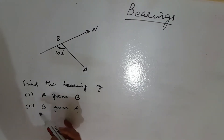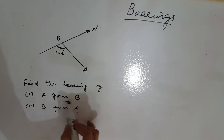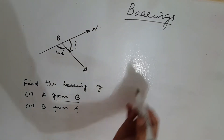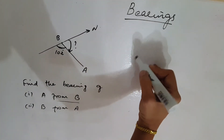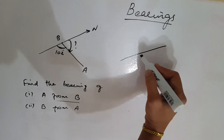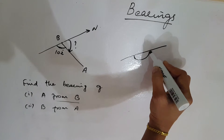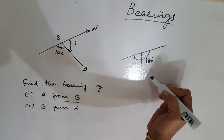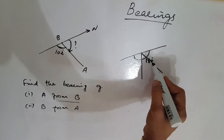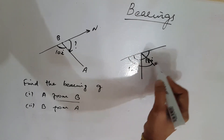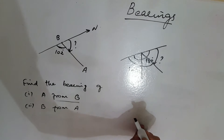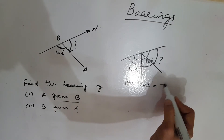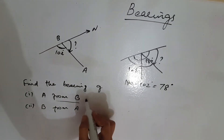In this question, find the bearing of A from B and B from A. From B means from B to A, so you can calculate in this area. This is the north side. This full is 180 degrees. This goes this side, so this is 102 degrees. We need to calculate this area: 180 minus 102 degrees is equal to 78 degrees. So this is 78 degrees.